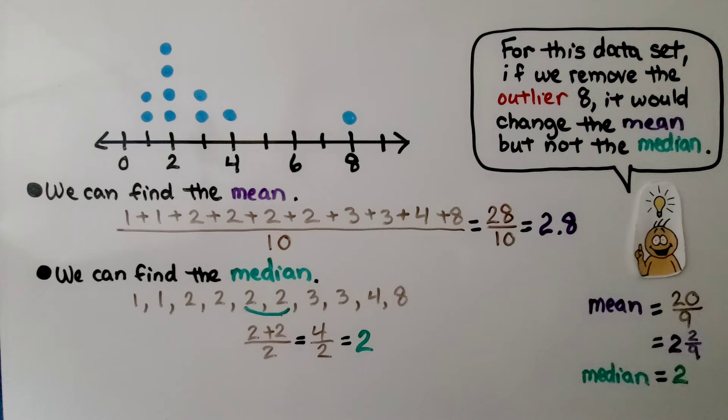And we can find the median. We can list them and we take the middle number, but in this case, because there's 10 numbers it's even, we take the 2 middle numbers and we find the average, the mean of these. And 2 plus 2 is 4, and we divide it by 2, because we added 2 digits. 4 divided by 2 is 2. The median is 2.